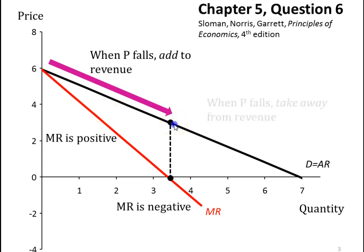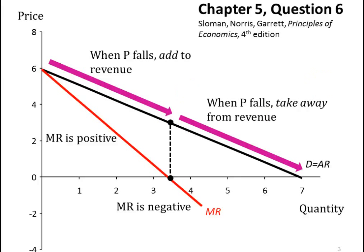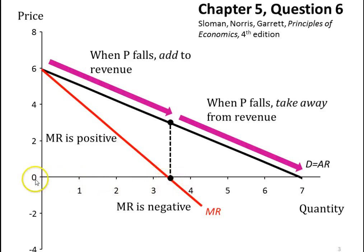However, after that point, as price continues to fall beyond this level, you'll be taking away from your total revenue. How do we know that? Because the marginal revenue curve is below zero — below the horizontal axis. Marginal revenue is negative, meaning you're taking away from total revenue.